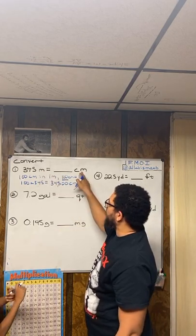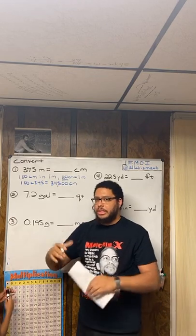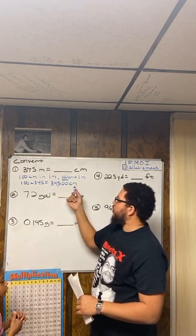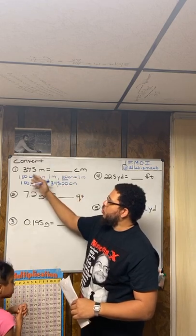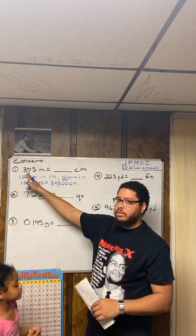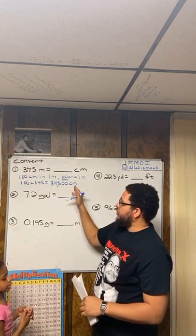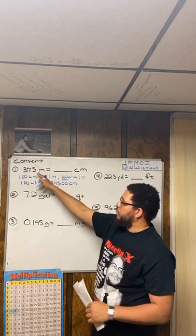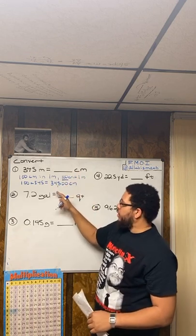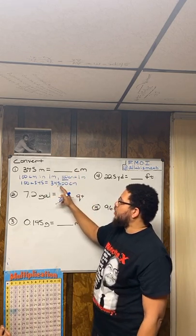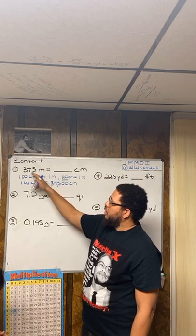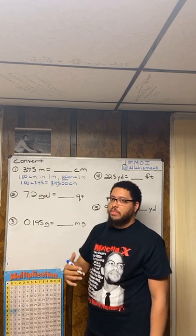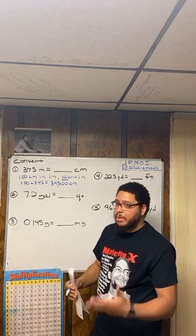That should make sense because a meter is a bigger unit than a centimeter. Since a meter is bigger, it takes more centimeters to equal a smaller amount of meters. One meter is bigger than one centimeter, so it makes sense that it takes 34,500 centimeters to equal 345 meters. Another way to look at this is in terms of a proportion, if that makes more sense to you.